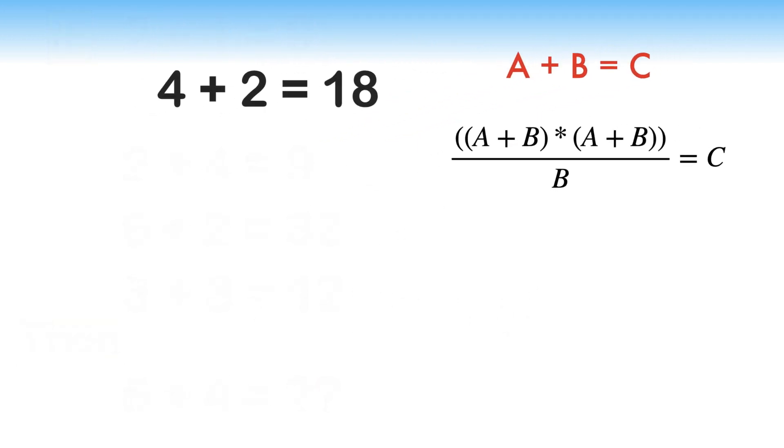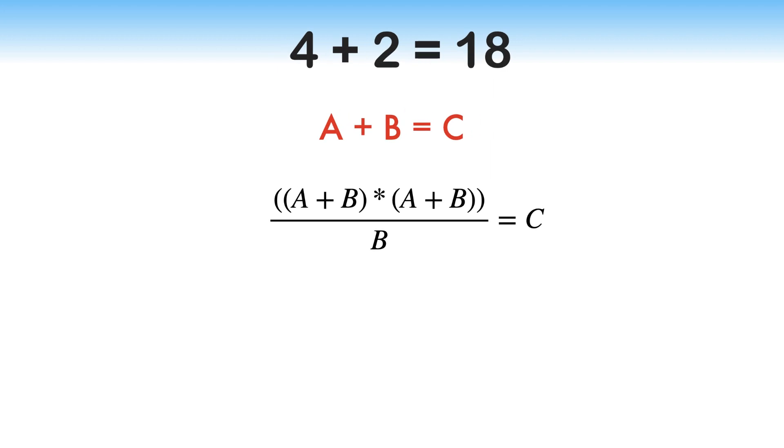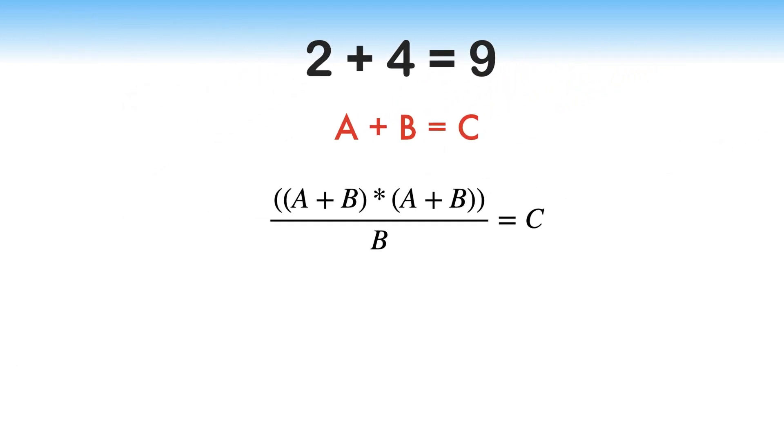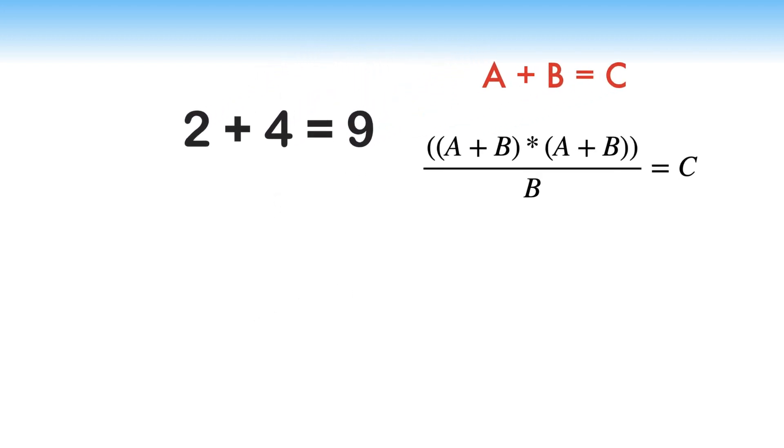In the third equation, A equals 2 and B equals 4. After substituting the value of A and B and simplifying, the equation becomes 6 times 6 over 4. 6 times 6 equals 36. 36 over 4 is equal to 9, which is RHS of the equation.